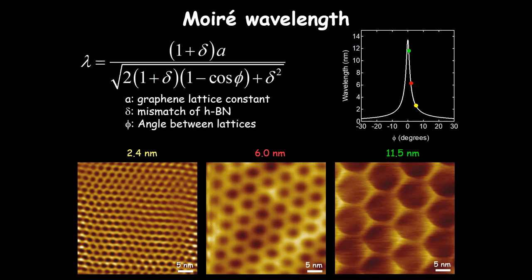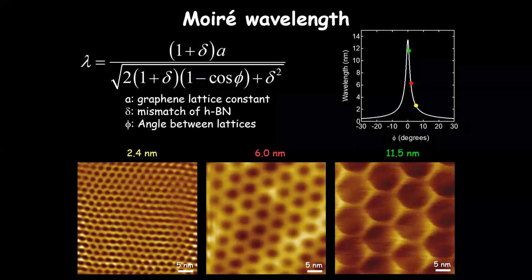We've seen moiré patterns by controlling the twist angle — from two nanometers to six to eleven nanometers in periodicity. The maximum moiré wavelength is set by the lattice mismatch of about 1.8% between graphene and hBN, giving a limit of about 14 nanometers — approximately 50 graphene lattice constants. We've now seen this has an effect on topography, and also on the spectroscopy and electronic properties of the graphene.